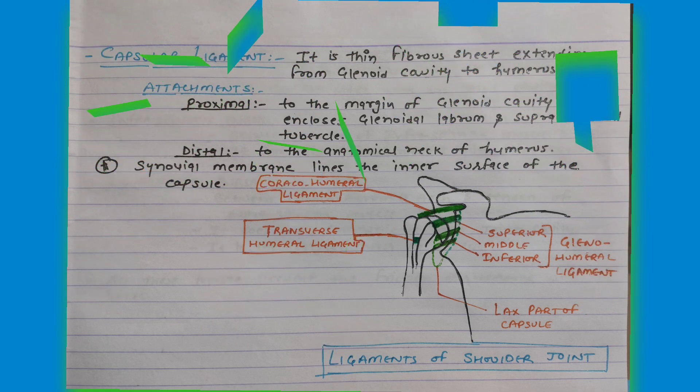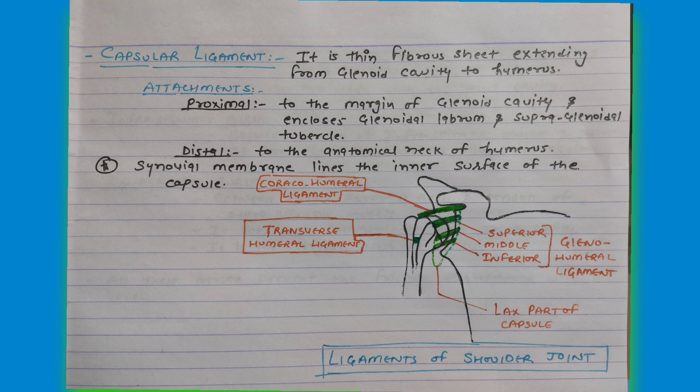The next heading is the capsular ligament. The capsular ligament is a fine thin fibrous sheet which extends from the glenoid cavity to the humerus. Proximally it is attached to the margin of the glenoid cavity, enclosing the glenoid labrum and the supraglenoid tubercle. Distally it is attached to the anatomical neck of the humerus. The synovial membrane lines the inner surface of the capsule.